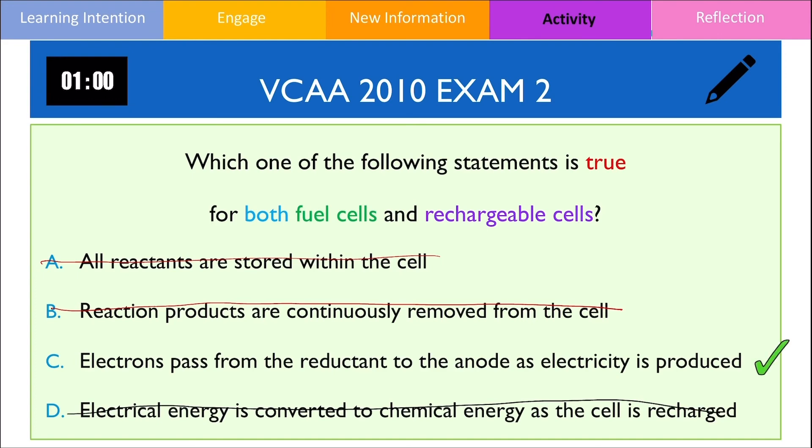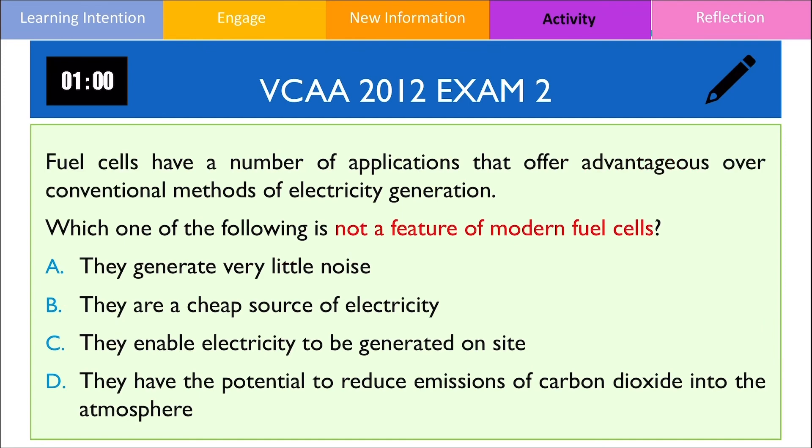Have a go with another question. In this question, it wants you to identify which of the following is not a feature of a modern fuel cell. If you answered this question correctly, you would have said B is the correct answer.